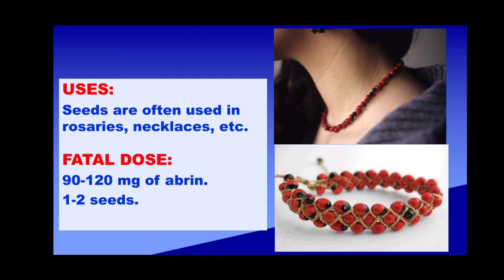Fatal dosage is one to two seeds — if you chew them and swallow them, they can be deadly. If seeds are swallowed without being chewed, there may not be much of a problem. Looking at the active toxic principle, Abrin: just 90 to 120 milligrams can be fatal to an adult — approximately one to two milligrams per kilogram of body weight. So it is a super toxic poison, or super toxin.